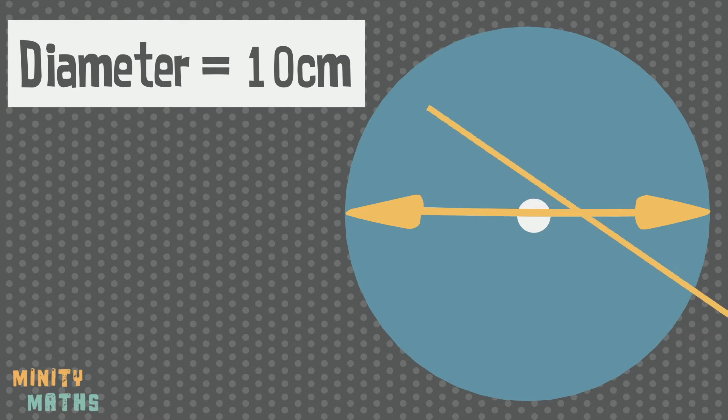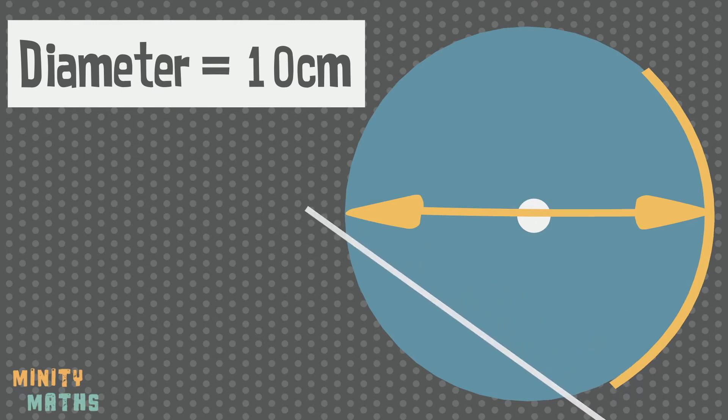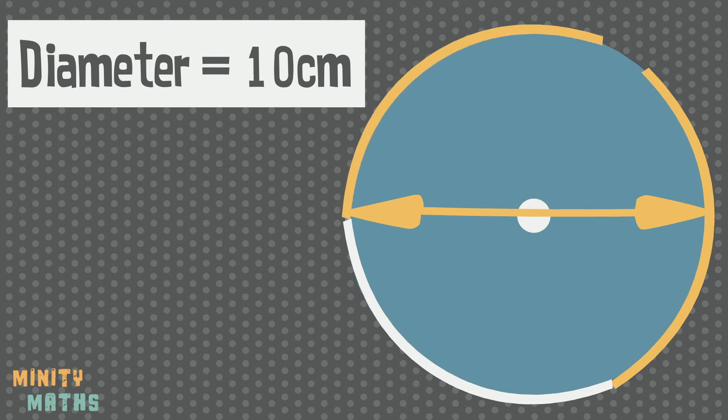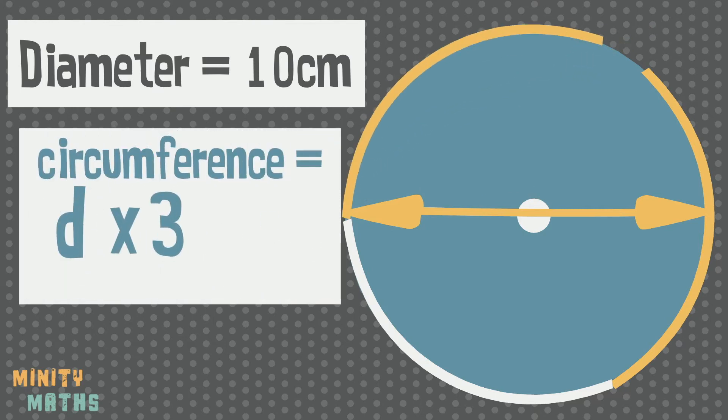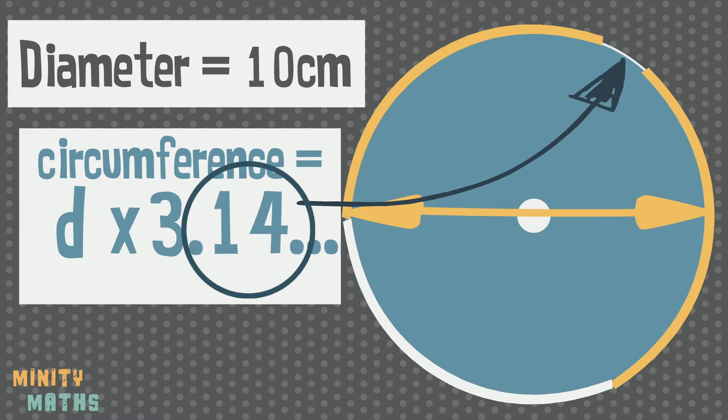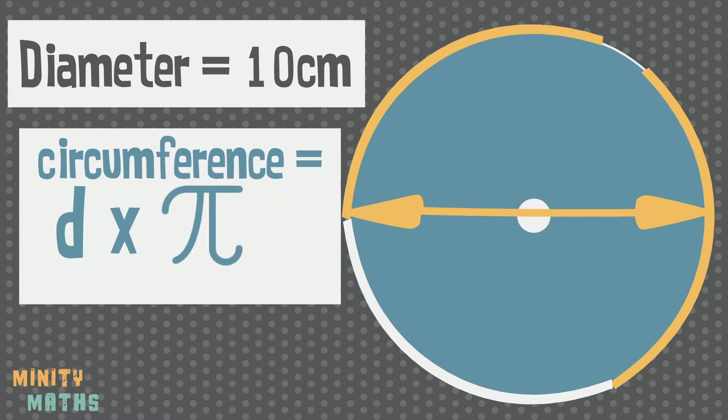If we were to take some pieces of string, each measuring the same length of the diameter, we could fit just over three of these strings around the circumference of the circle. In fact the just over three is exactly pi. Therefore the diameter will fit around the circumference exactly pi times.